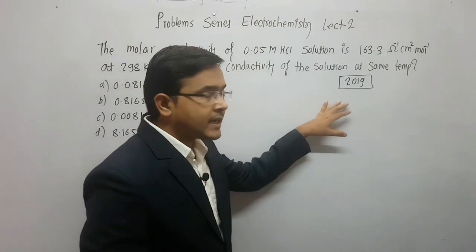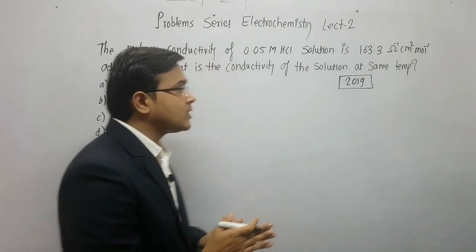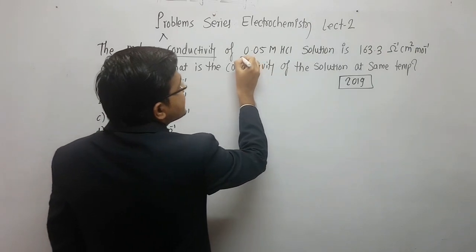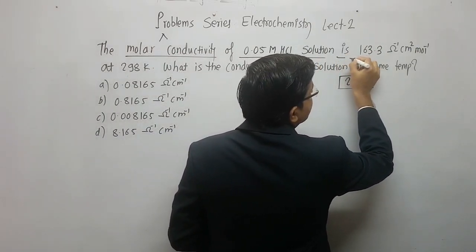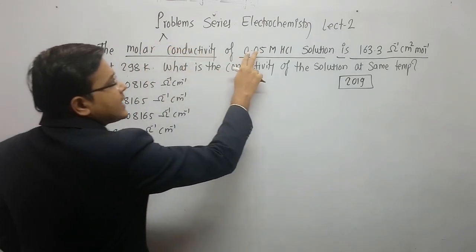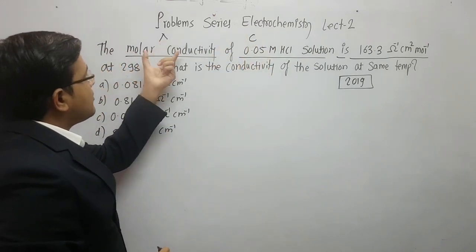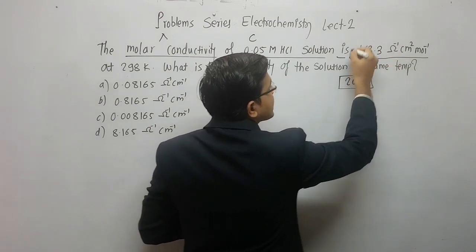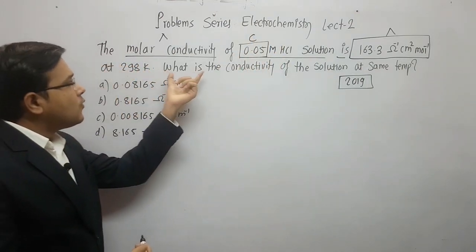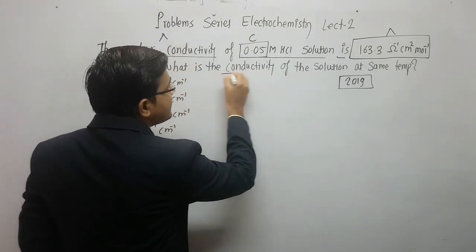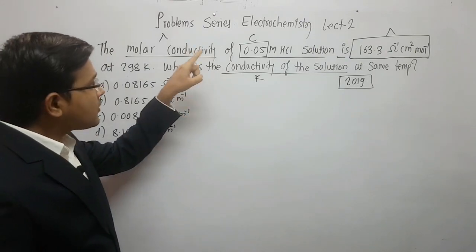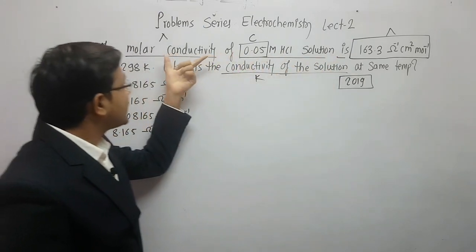The second question, also asked in 2019: the molar conductivity (λ) of a 0.05 molar HCl solution is 163.3 S·cm² per mole at 298 Kelvin. What is the conductivity (K) of the solution at the same temperature? This is a simple type of problem — you have the concentration, the molar conductivity, and you need to find the conductivity.